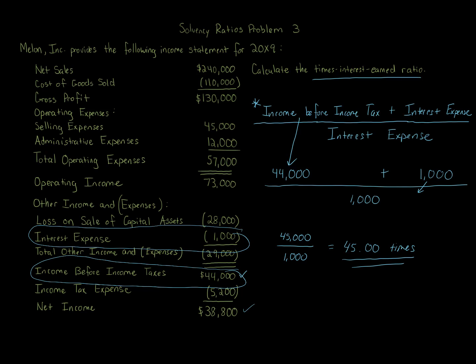One thing to consider: if you're not given income before income taxes and instead are only given net income of $38,800, you can add back income tax expense to get the $44,000 figure. In some classes you may need to calculate income before income taxes yourself — just take net income plus income tax expense. You should always be given interest expense, but if income before income taxes isn't listed, use net income plus income tax expense to find it.